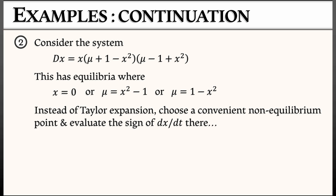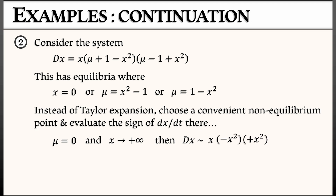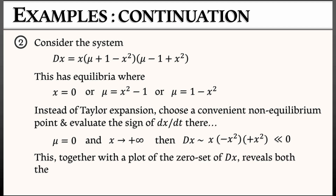Let's pick mu equals 0 and x going to positive infinity — we're definitely not at an equilibrium there. With mu vanishing and x really big, dx/dt equals x times (0 plus 1 minus x-squared) times (0 minus 1 plus x-squared). That gives a big positive number times a large negative number times a large positive number — that's negative. I don't care what the actual value is, just whether it's positive or negative. It's negative. And that means everything in that connected component of the complement of the zero set is going to be negative.